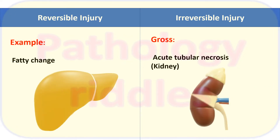Examples of reversible injury include fatty change in alcoholic liver disease. If the patient stops consuming alcohol, the fatty change can revert to normal and hepatocytes may become normal. An example of irreversible injury is acute tubular necrosis, where the changes will not be reversible.